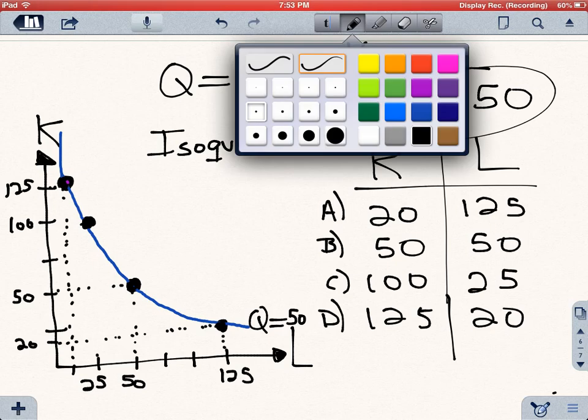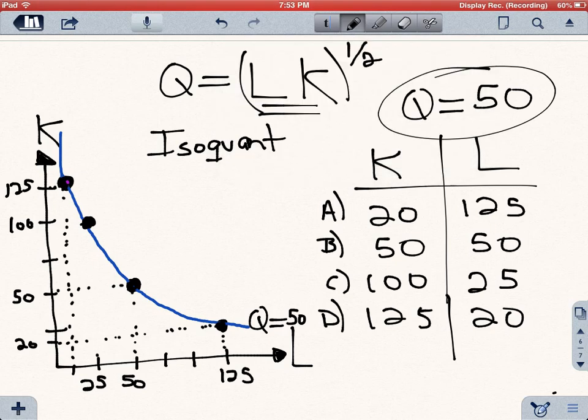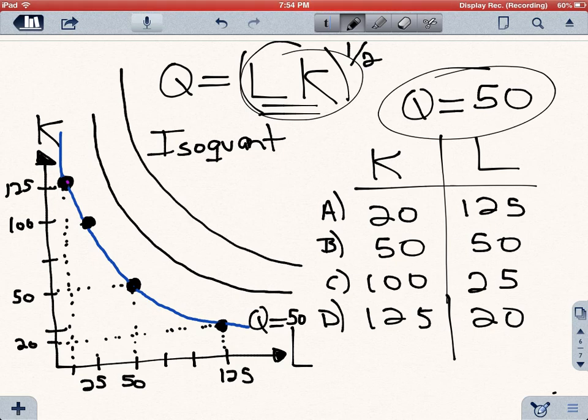Because let's say you can actually produce more output if you want, and since the form of the production function is the same, every time you produce more output, what you do is you move to an isoquant that is farther away from the origin but keeps the same slope. And the same thing if you produce less output.